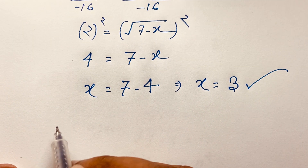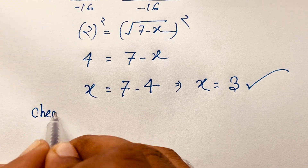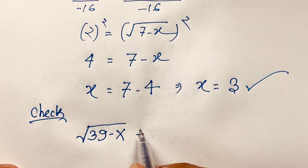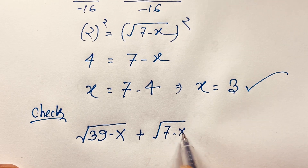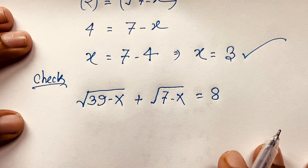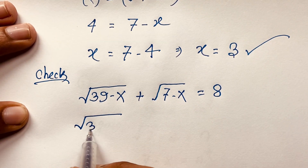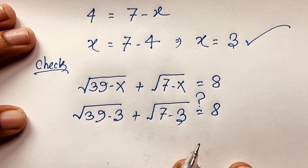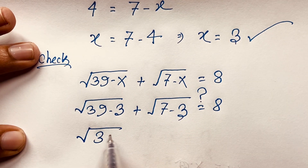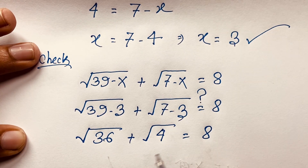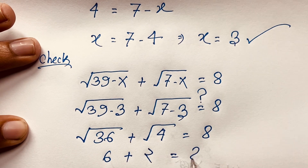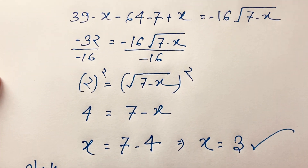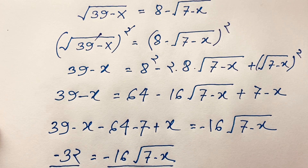Let's verify: substituting x equals 3 into the original equation gives square root of (39 minus 3) plus square root of (7 minus 3) equals square root of 36 plus square root of 4, which is 6 plus 2, which equals 8. Left-hand side equals right-hand side. Thank you all. If you enjoyed this radical Math Olympiad question, please subscribe to my channel. Goodbye, take care everyone.